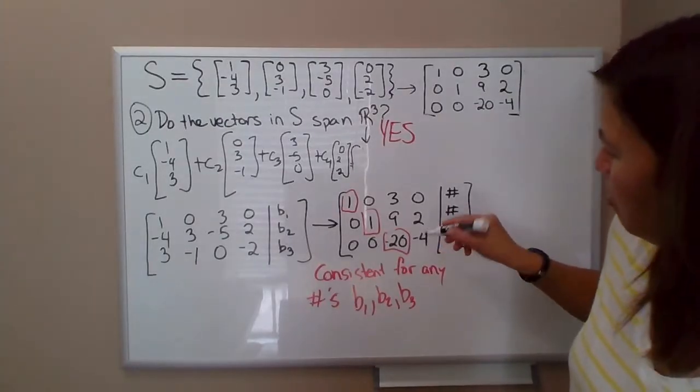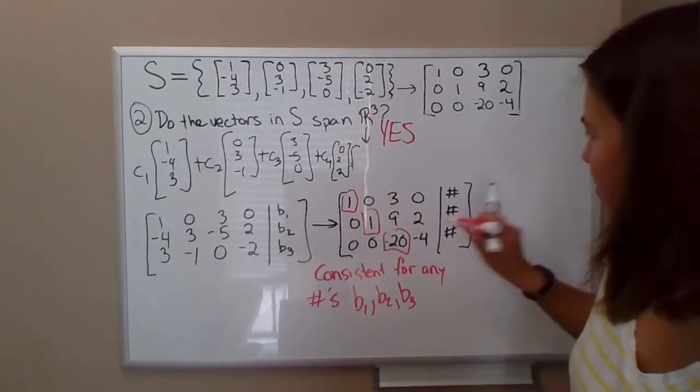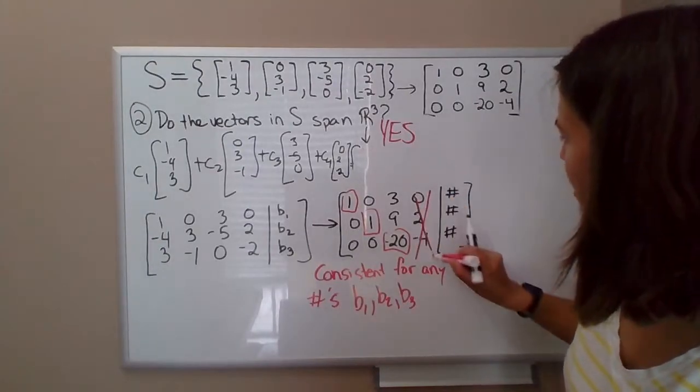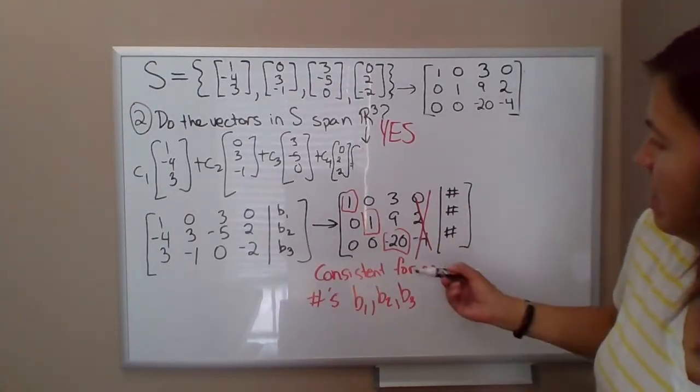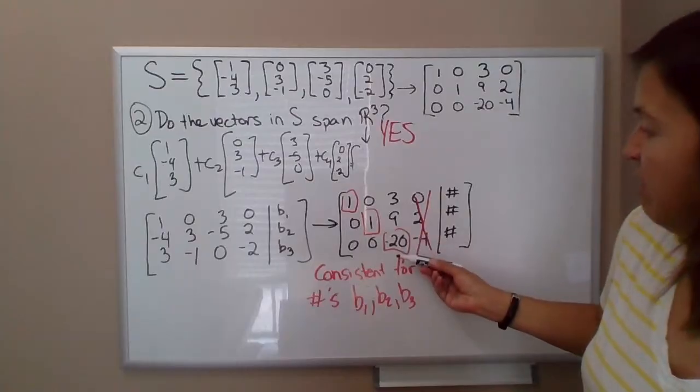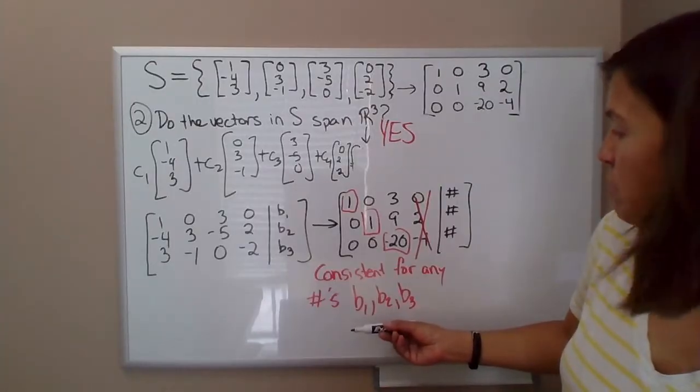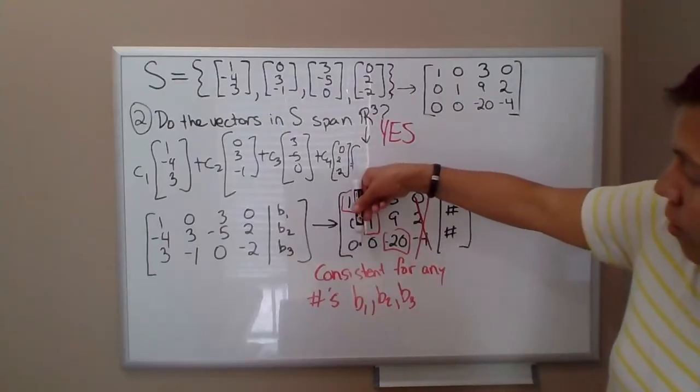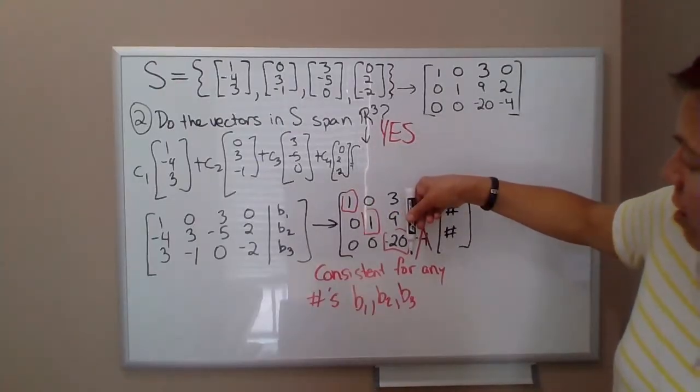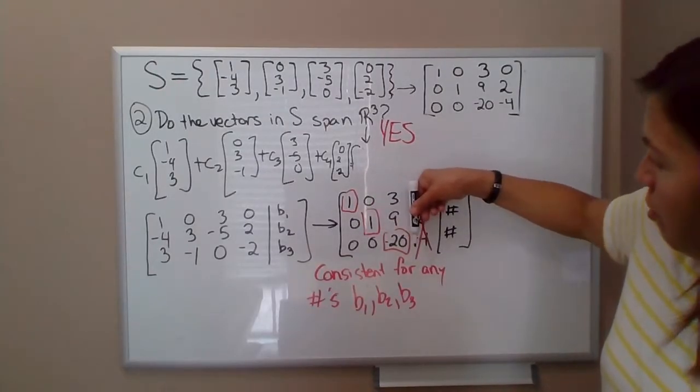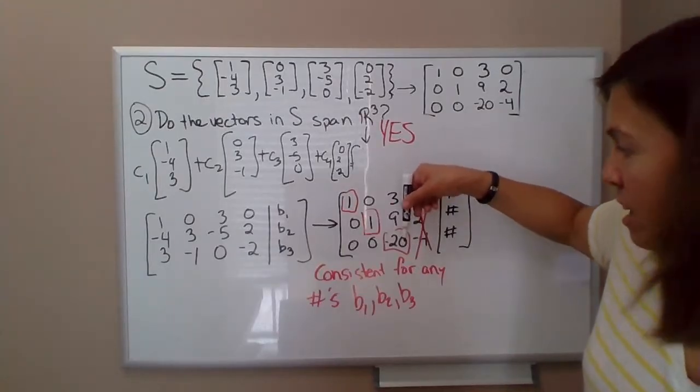And notice, turns out, we don't really need this last column. Notice that if we delete the last column, then still we've got a pivot in every row. So this will be consistent for any values of B1, B2, B3. And now you also have a pivot in every column.